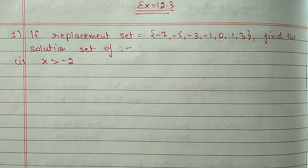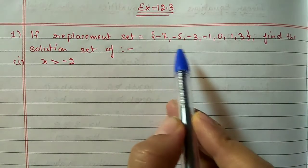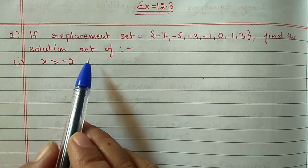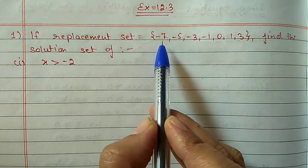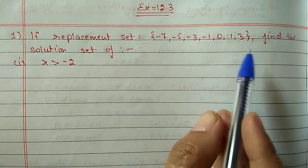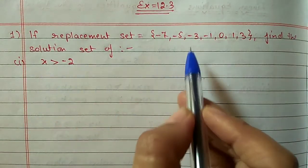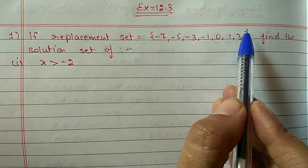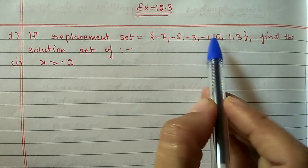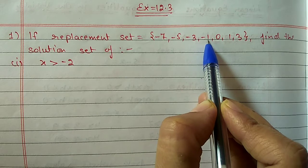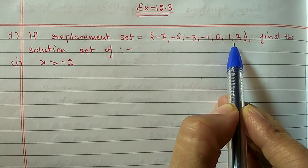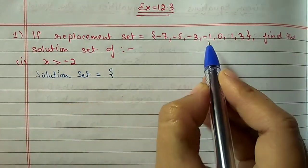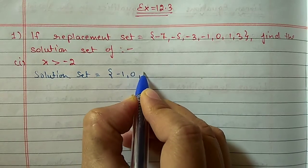Now Exercise 12.3, Question 1. The replacement set is {-7, -5, -3, -1, 0, 1, 3}. Find the solution set of x greater than minus 2. We must choose answers from this replacement set only. Minus 2 lies between minus 3 and minus 1, so we take numbers to the right of minus 2: minus 1, 0, 1, and 3. Solution set is {-1, 0, 1, 3}.